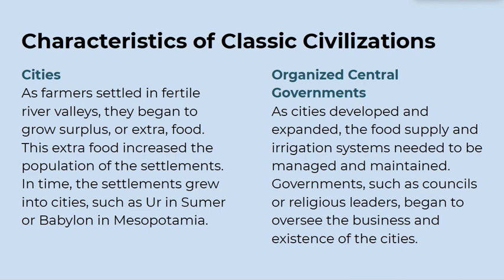Organized central governments: as cities developed and expanded, the food supply and irrigation systems needed to be managed and maintained. Governments, such as councils or religious leaders, began to oversee the business and existence of the cities.